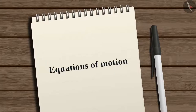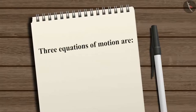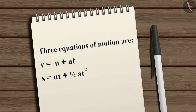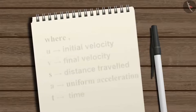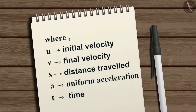The three equations of motion are: v = u + at, s = ut + ½at², and 2as = v² - u². Where u is initial velocity, v is final velocity, s is the distance traveled, a is the uniform acceleration, and t is time.